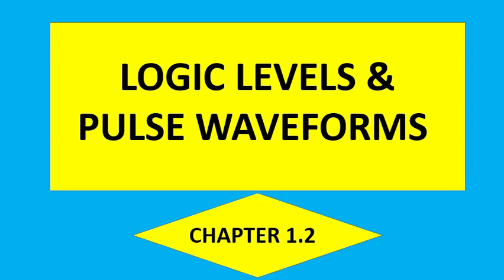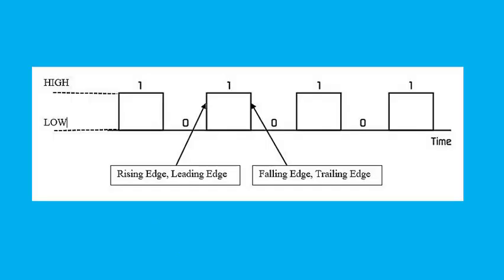Logic levels and pulse waveforms. Digital systems use the binary number system. Therefore, two-state devices are used to represent the two binary digits 1 and 0 by two different voltage levels called high and low. If the high voltage level is used to represent 1 and the low voltage level to represent 0,